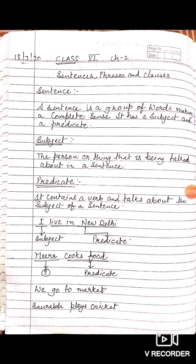Second example: 'Meera cooks food.' Here, Meera is the subject — we are talking about Meera, that she is cooking food. And 'cooks food' is the predicate — it contains a verb and talks about the subject.